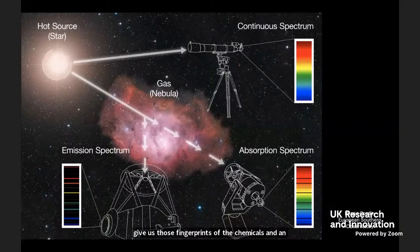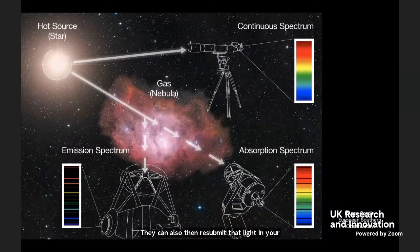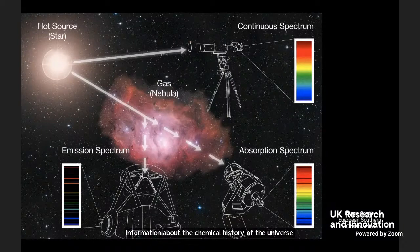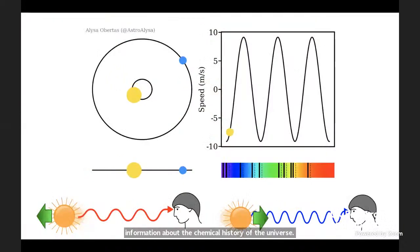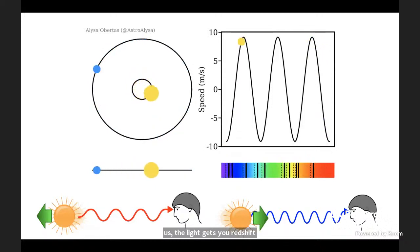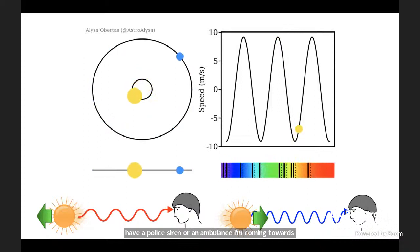Once those atoms have absorbed the photons from stars, they can also re-emit that light, giving you emission spectra when you've got excited hot gas nebulae. This is a really powerful tool for getting lots of information about the chemical history of the universe. Crucially, it's not just about what makes up the gas and the stars — we also have kinematic or velocity information. As stars move either towards us or away from us, the light gets redshifted or blueshifted. This is analogous to the Doppler shift you hear when a police siren comes towards you and moves away — the waves get compressed or stretched, changing the wavelength, and this happens with light too.